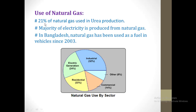In our country, 21% of natural gas is also used in urea production. All of you know that urea is one kind of fertilizer. In our country, the majority of electricity is produced from natural gas. In Bangladesh, natural gas is also used in vehicles as a fuel since 2003.